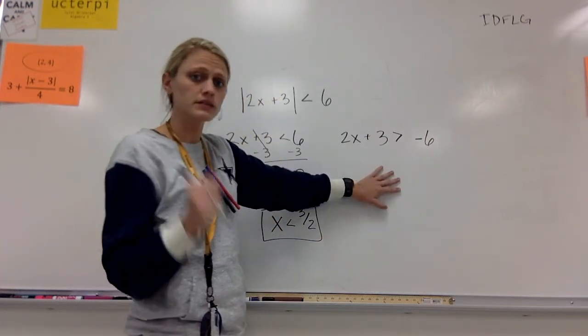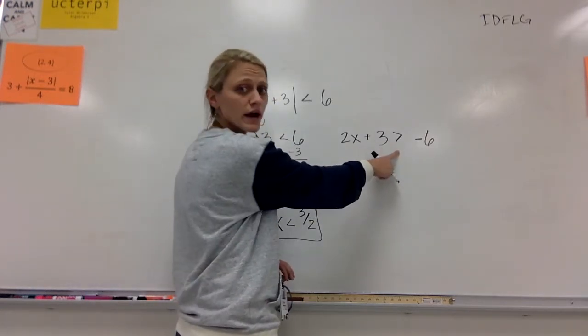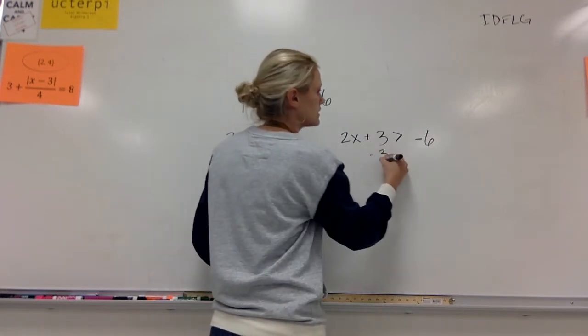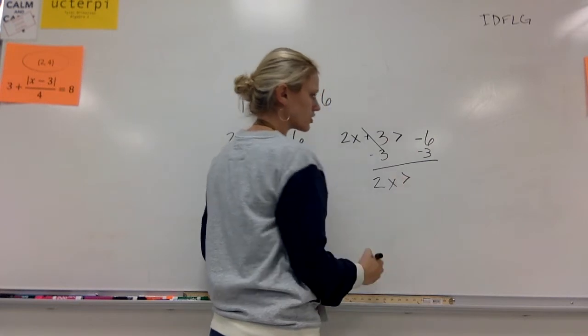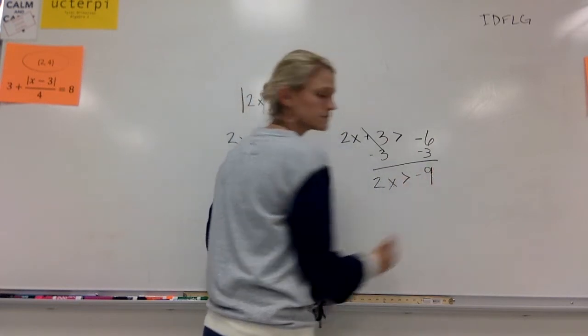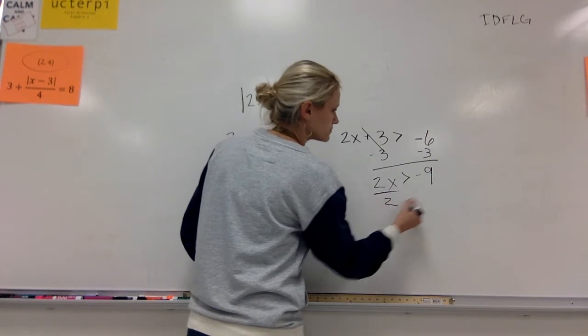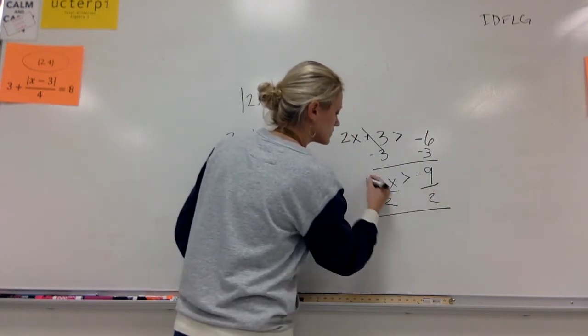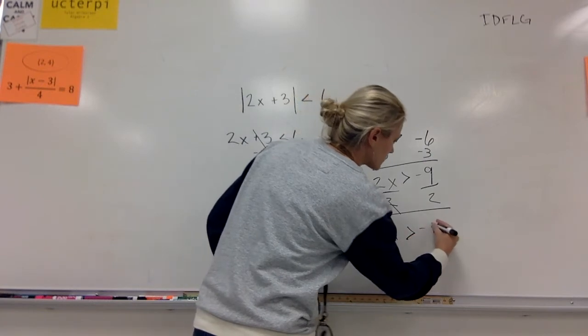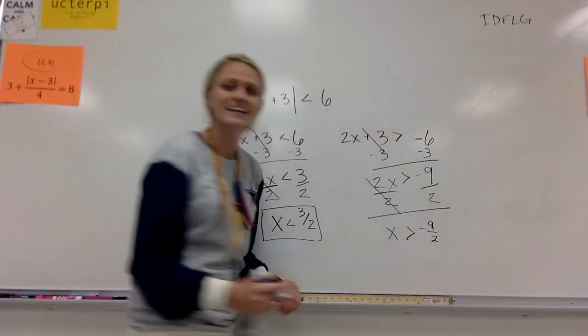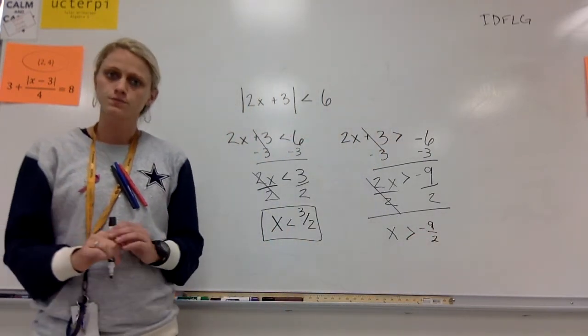Now, remember, I've got 2 in this case, so I've got 2x plus 3 is greater than negative 6. Move that 3 over by subtracting it. I get 2x is greater than negative 9. And then I'll divide by 2, okay? So then x is greater than negative 9 over 2, okay?